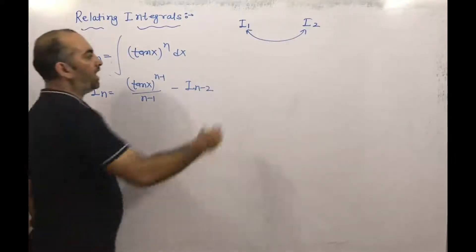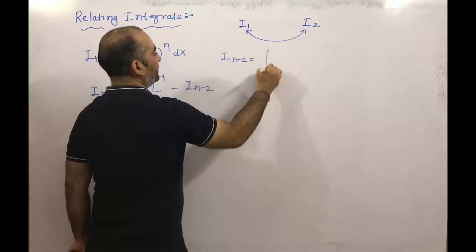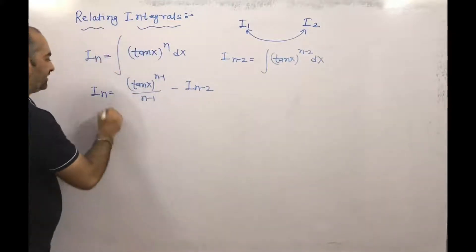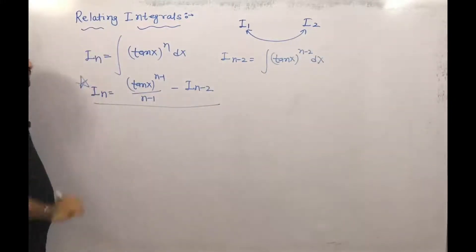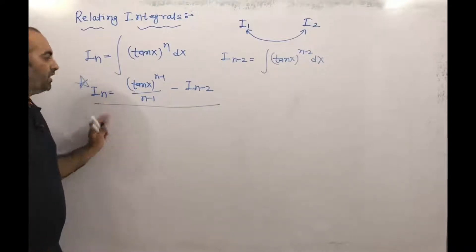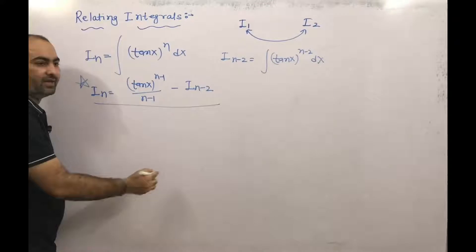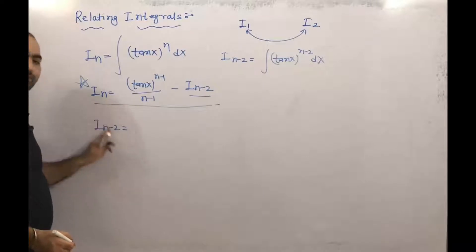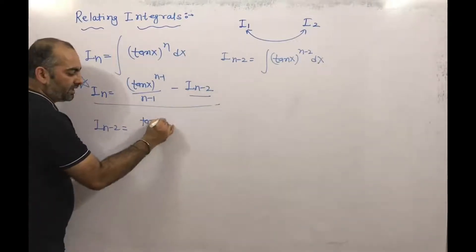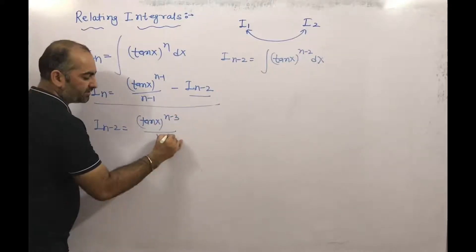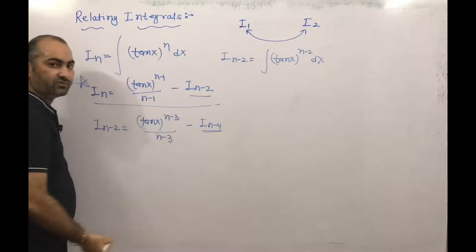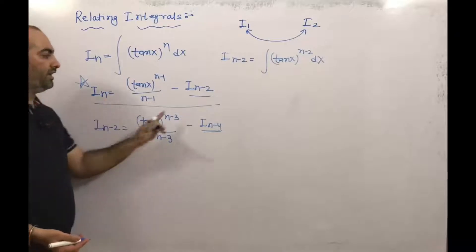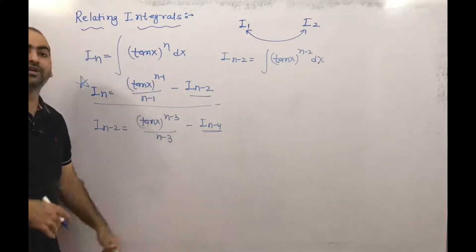Here, I(n-2) is the integral of tan(x)^(n-2) dx. By using this relation, we can find In. We substitute In-2 back using the same formula — replacing n with n-2 — to get tan(x)^(n-3)/(n-3) minus I(n-4), and so on. We continue this process, finding I(n-4) by substituting n with n-4, getting the relation between In and I(n-2) at each step.